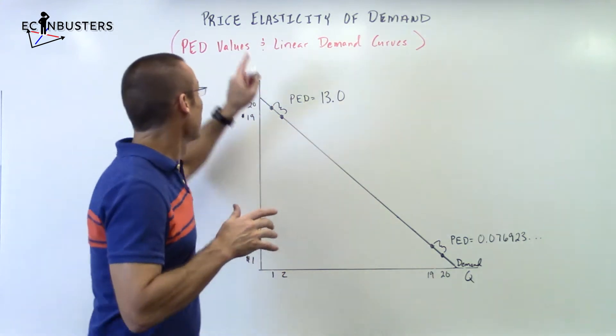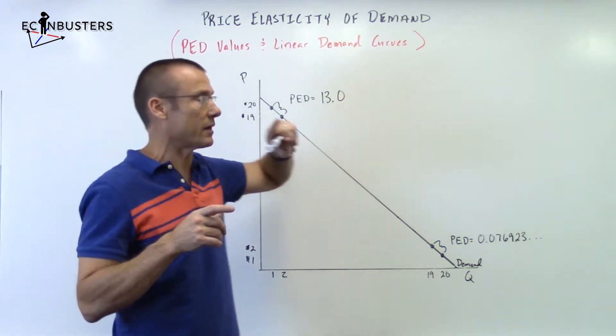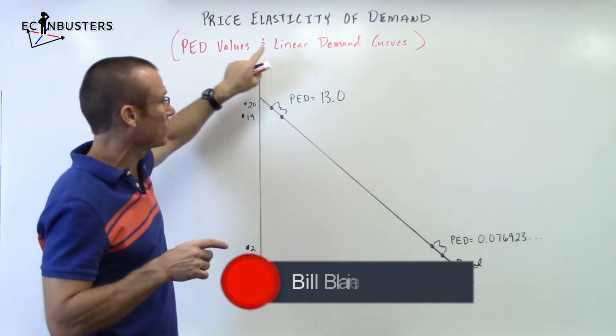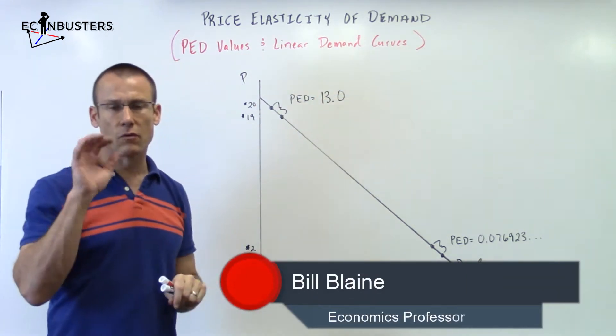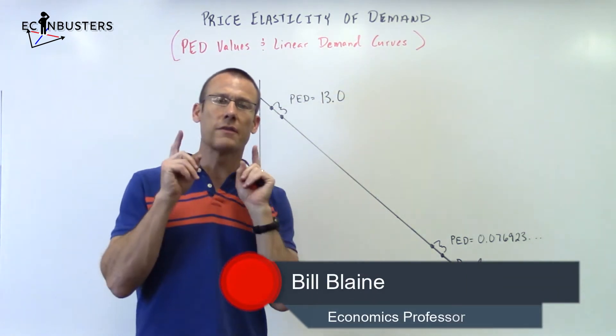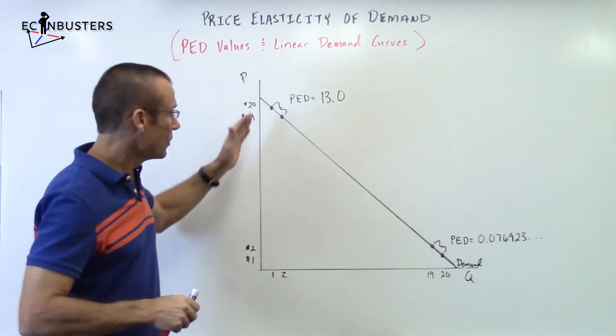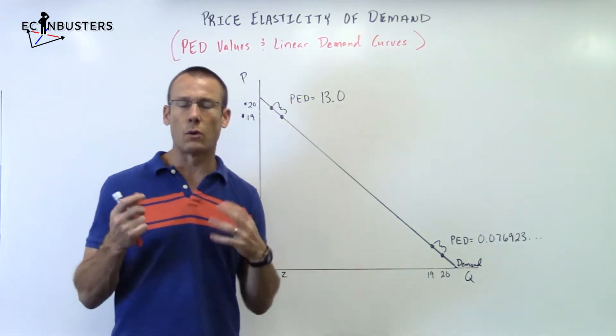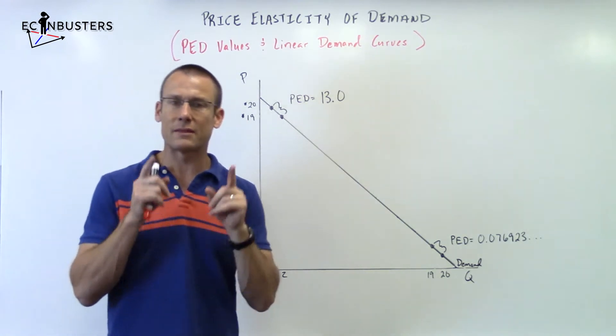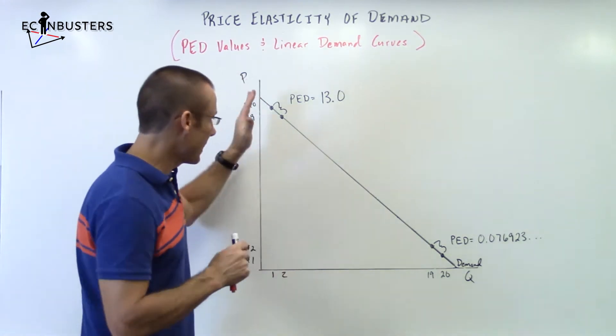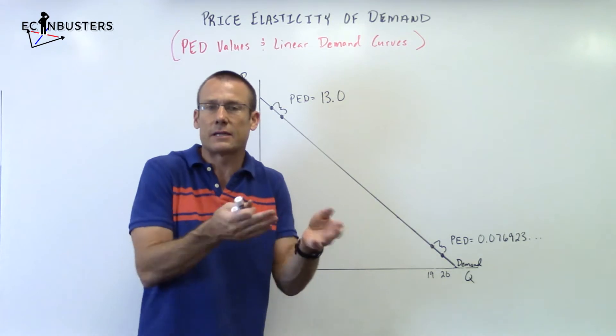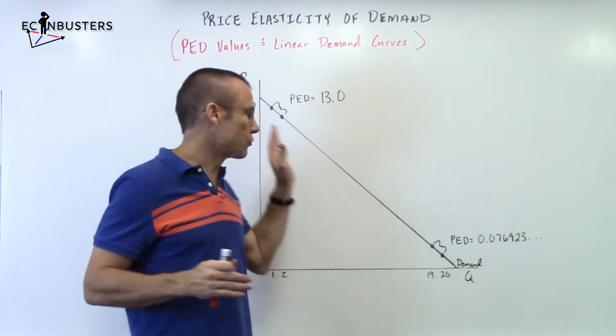Hey everybody, welcome back. We are now on price elasticity of demand and we're looking at the PED values on a linear demand curve. Right at the top guys, remember that slope and elasticity are not the same thing. Take a look at this - we've got a linear demand curve. What would that mean for a slope value? That would mean that slope is constant at every place on this curve since it's linear. The slope is constant throughout the entire curve.